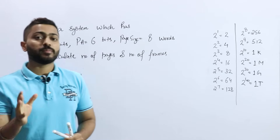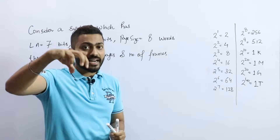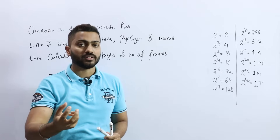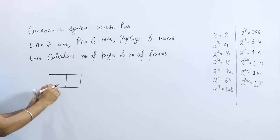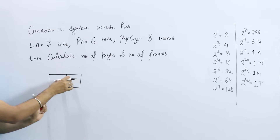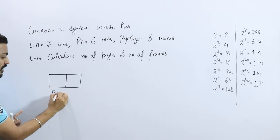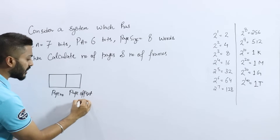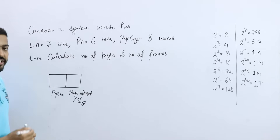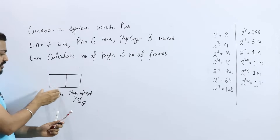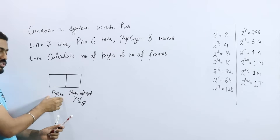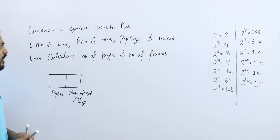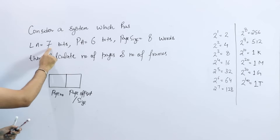The logical address is created by the CPU — the address the CPU generates is the logical address. A logical address is comprised of two parts: the page number and the page offset (also called page size). The most significant bits (MSB) represent the page number, and the least significant bits (LSB) represent the page offset.